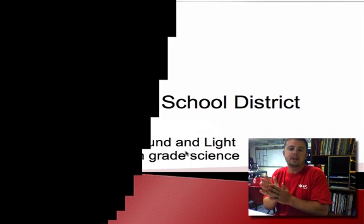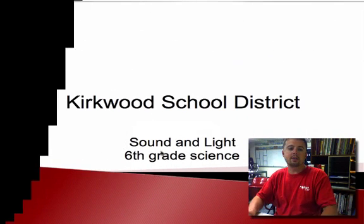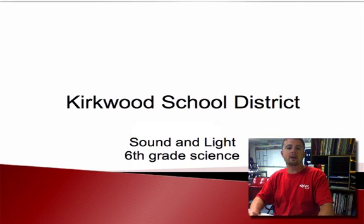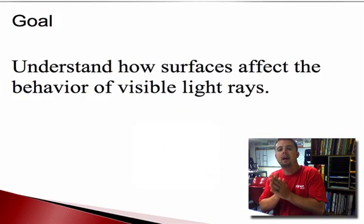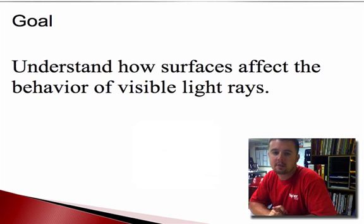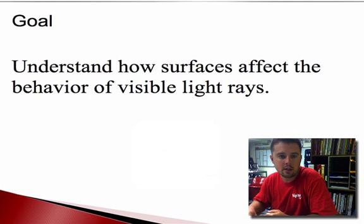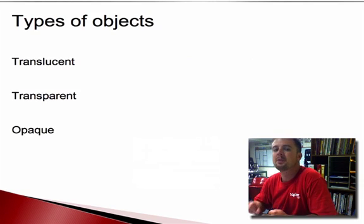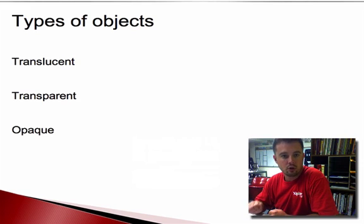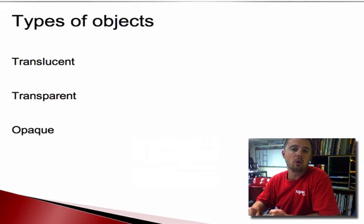Welcome to Kirkwood School District Sound and Light 6th grade science. Today we're going to look at understanding how surfaces can affect the behavior of visible light rays. We're going to get into three very specific types of surfaces: translucent, transparent, and opaque.